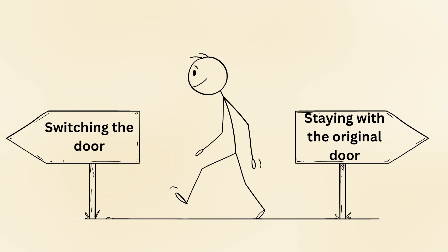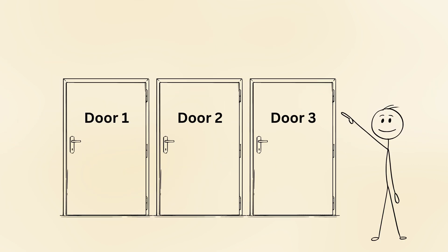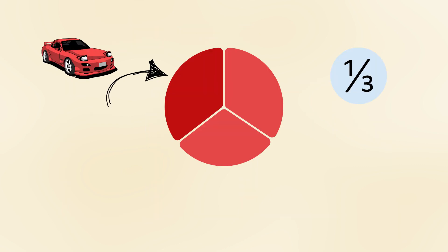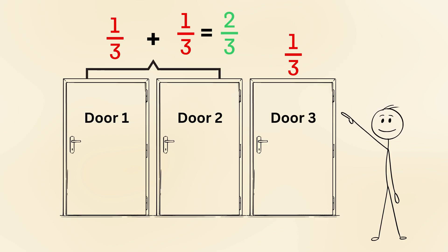Today, we'll explain why switching is the better strategy and how this counterintuitive problem works. When you first choose a door, the chance that you pick the car is one out of three. That means there is a 1-3 probability that the car is behind your chosen door and a 2-3 chance that the car is behind one of the other two doors.